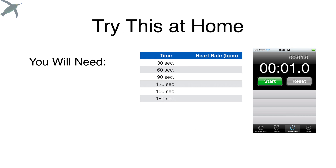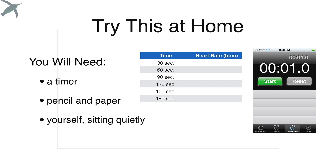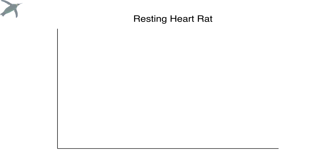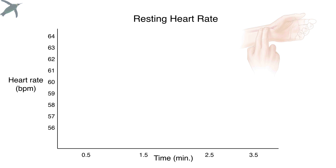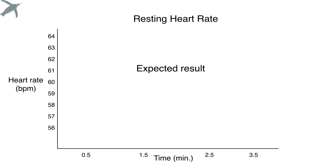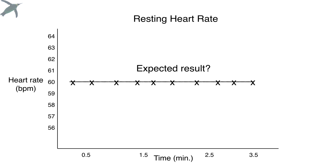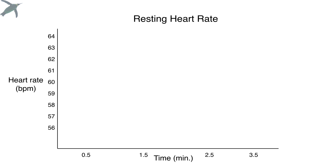Try this at home: you're going to need a timer, something to write with, and yourself. You're going to measure your resting heart rate over time using your radial pulse. Sit quietly, do nothing, try not to have very exciting thoughts. If you're just sitting there being calm, your heart rate should be constant, right? Most people would expect that — but you might be very surprised.